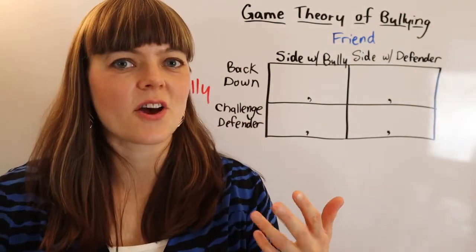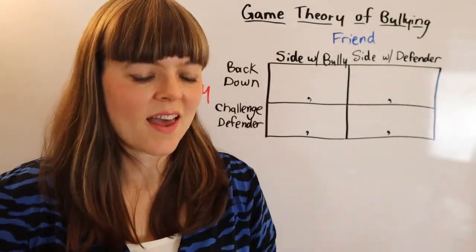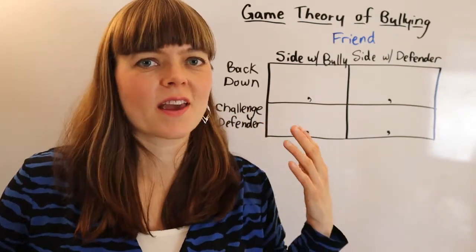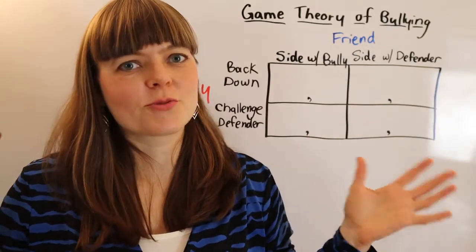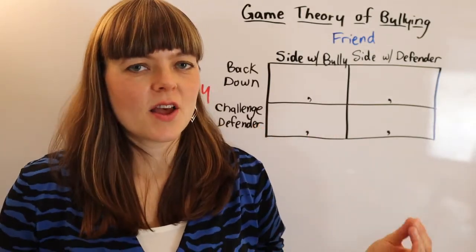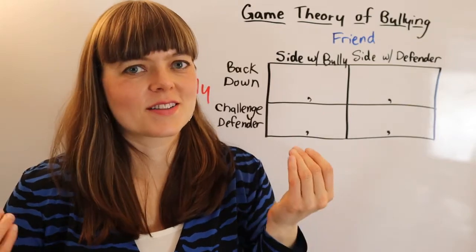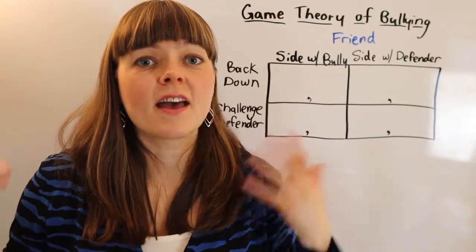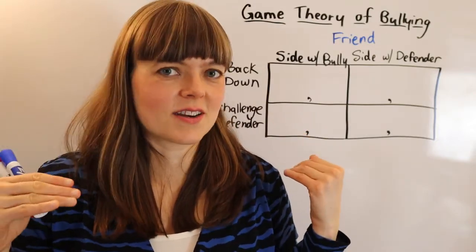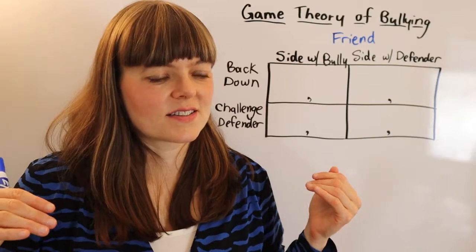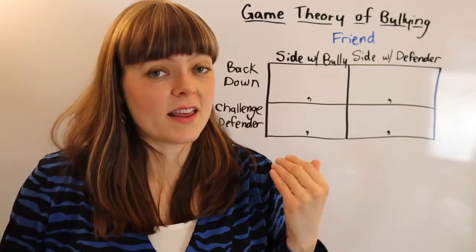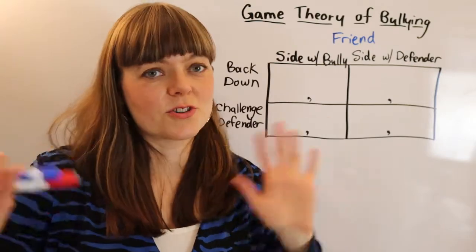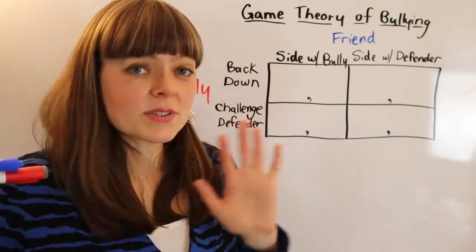This video is the second in my series on the game theory of bullying. There are three games I'm trying to model. This is schoolyard bullying for fifth graders — a group of fifth grade friends where one friend is trying to decide whether to bully. The first game, covered in a previous video, is where the bully decides whether to bully, and each group member decides whether to stand up and defend the victim or stay quiet.